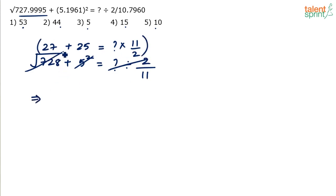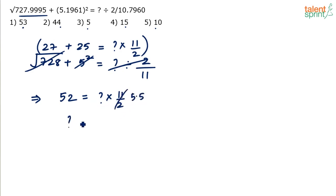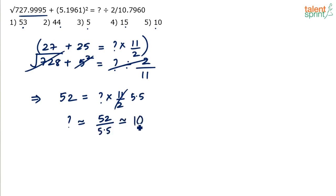27 plus 25 is 52. So 52 equals question mark times 11 by 2, or times 5.5. The approximate value of question mark is 52 by 5.5. Taking it as 55 by 5.5 gives 10, so the answer is somewhere around 10.